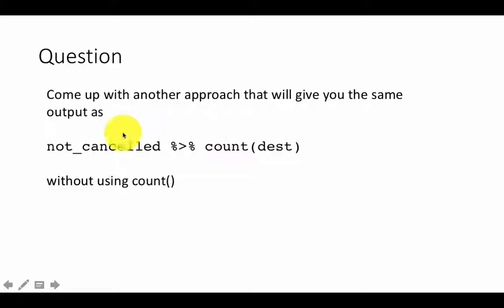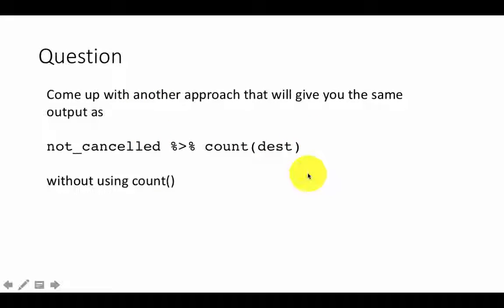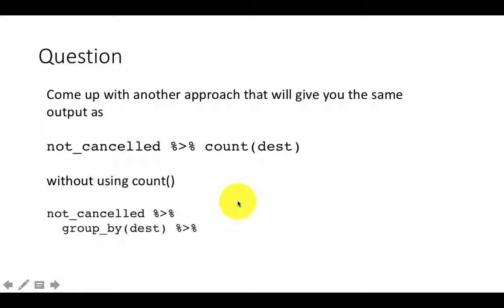Come up with another approach that gives the same output as using the `count()` function. We're counting the number of flights per destination for non-cancelled flights. Obviously the only other way to do counting is in `summarize()`, using `n()`. So you take the non-cancelled flights, group by destination, and then summarize with the count. Clearly, when you want to count, `count()` is much better since you don't have to separately group and summarize — but this shows the underlying equivalence.